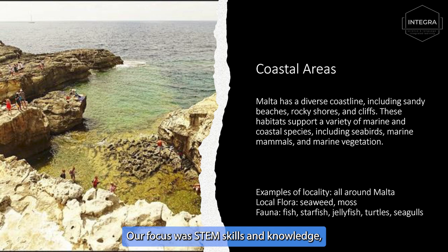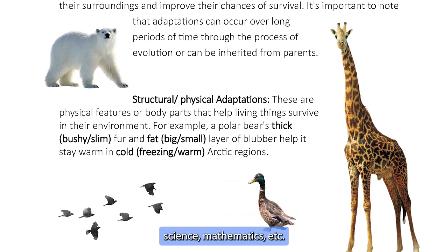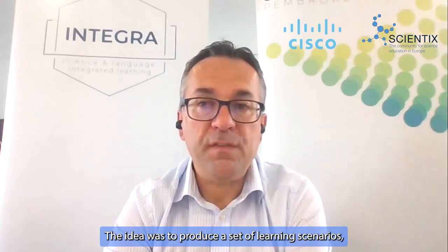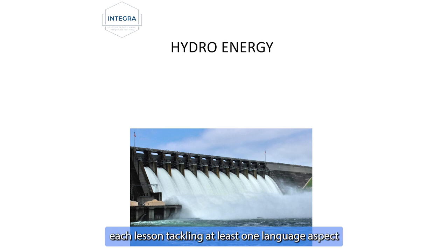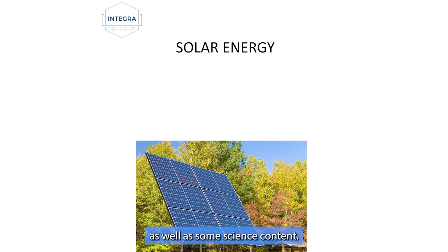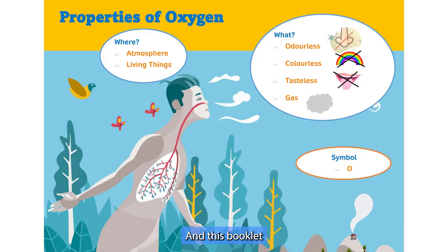Our focus was STEM skills and knowledge — science, mathematics, etc. The idea was to produce a set of learning scenarios using the concept of CLIL, content and language integrated learning. Teachers were assisted by science and English educators, and together they developed 12 learning scenarios, each tackling at least one language aspect as well as some science content. These 12 learning scenarios were compiled into one booklet with lesson plans, worksheets, and lists of resources required, which were then disseminated to educators.